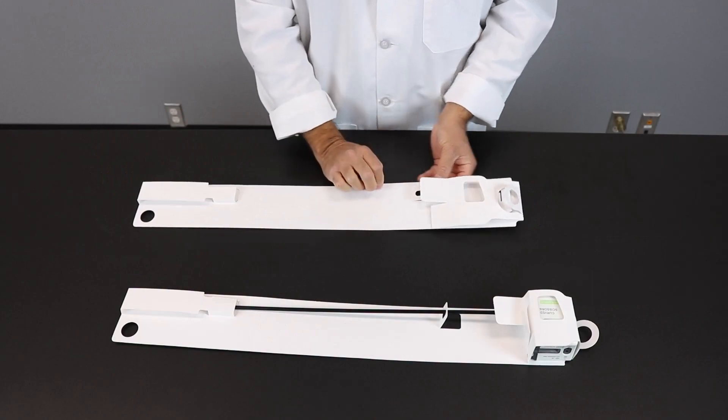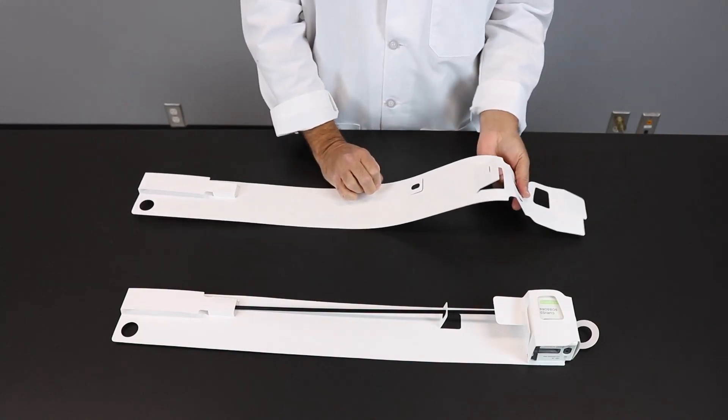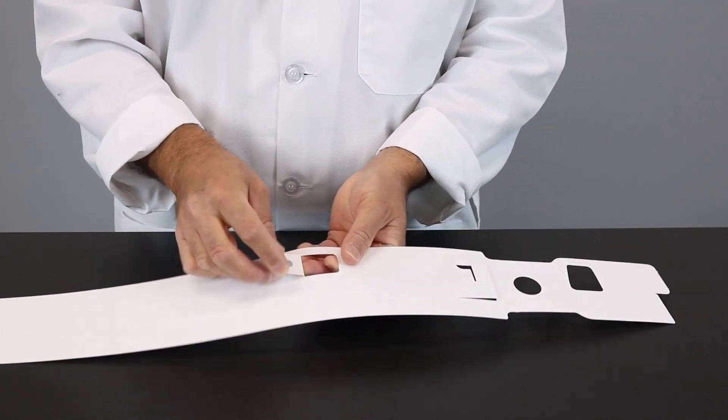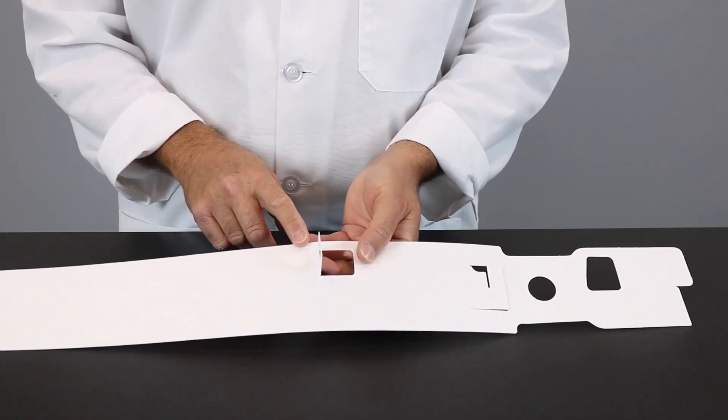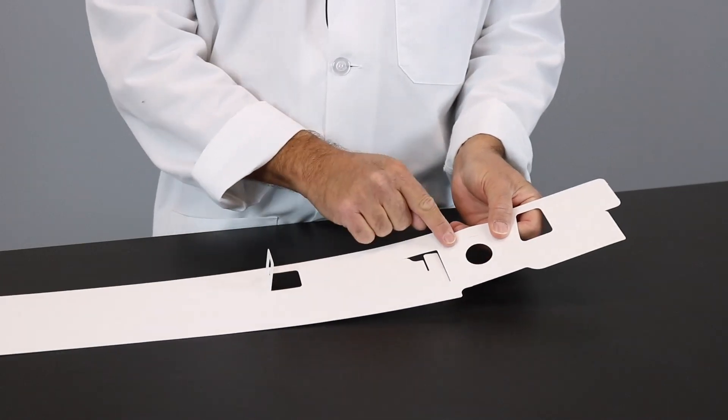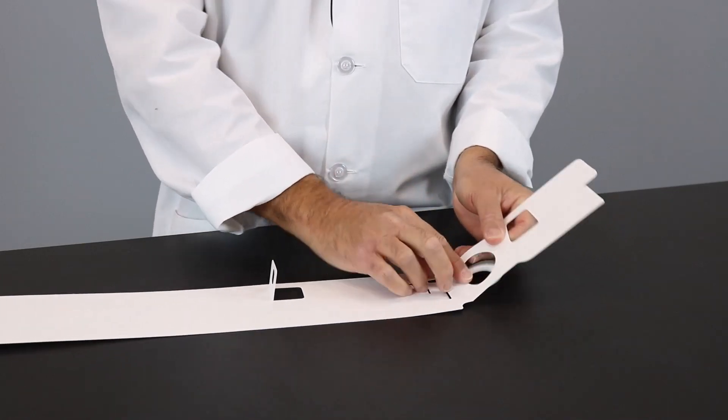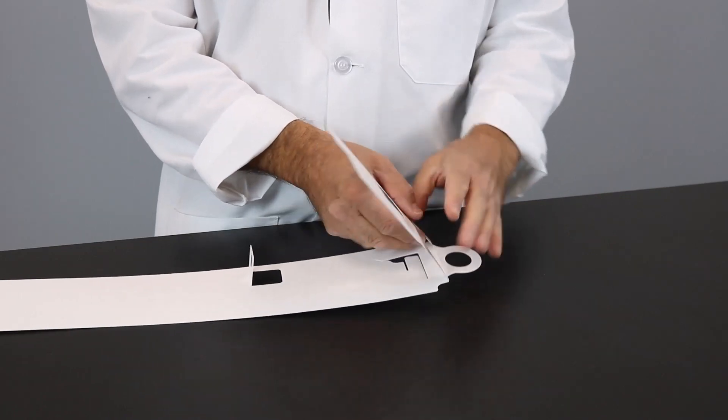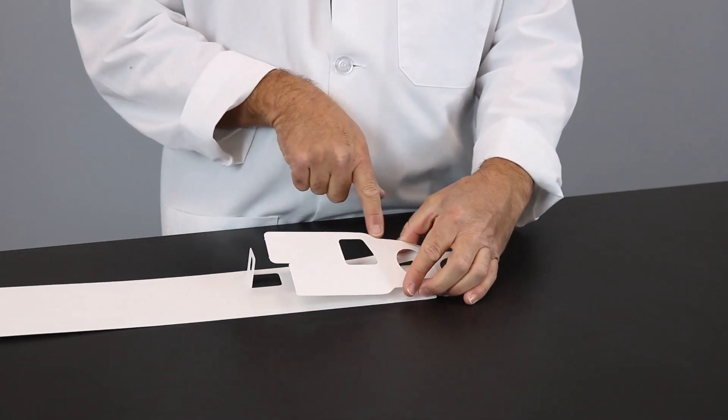The next step is fold the housing flap back and take the islet at that score line and make a crease making sure it's up. Then pop out the retrieval ring, folding it down at that crease of the score line.